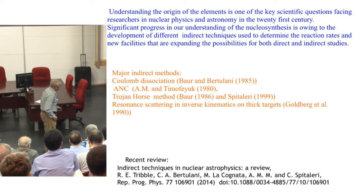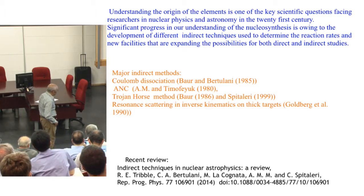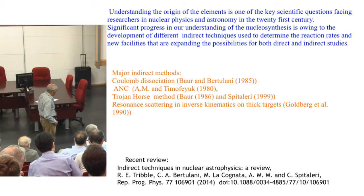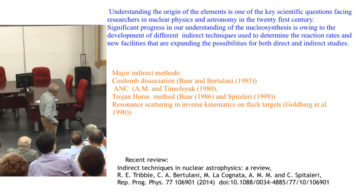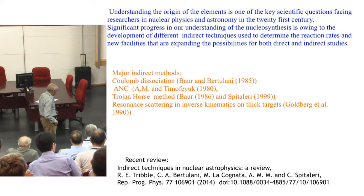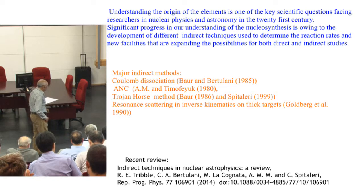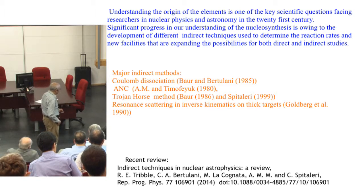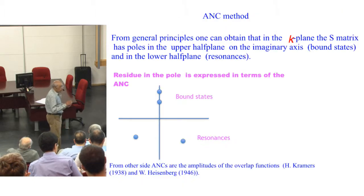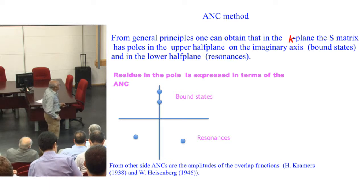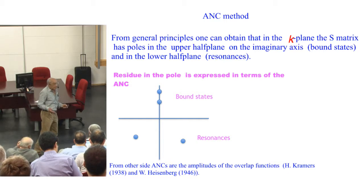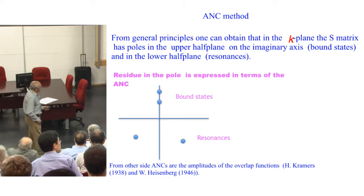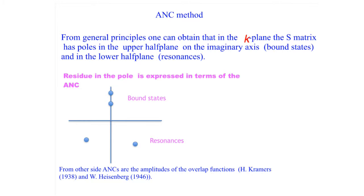I would like to draw attention that recently there was a review paper published in Reports on Progress in Physics in fall 2014. The co-authors are Tribble, Bertulani, La Cognata, Mukhamedzhanov, and Spitaleri. If people are interested in indirect techniques, they can read this review. I will talk today only about two techniques, ANC and Trojan horse. I have only 25 minutes. I am too humble to talk about Coulomb dissociation in front of Carlos, who is the author of this technique.